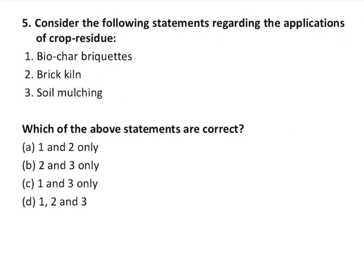Question number five is on crop residue. The question asks about applications of crop residue. The first option — biochar briquettes — is correct. The second — brick kiln — is also correct. The third — soil mulching — is also correct. All three statements are correct.